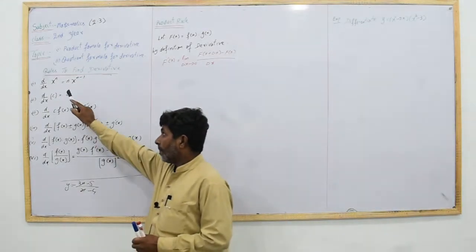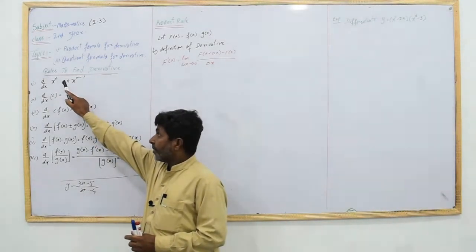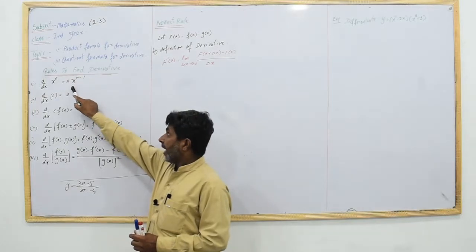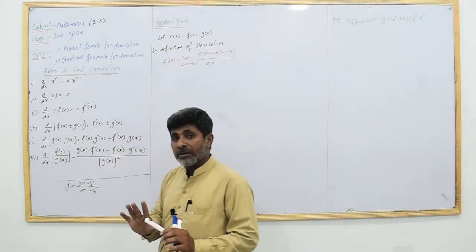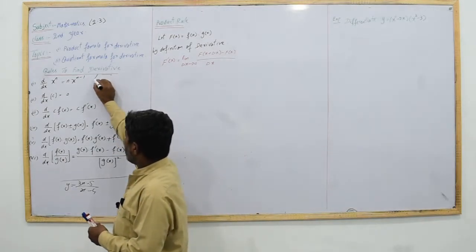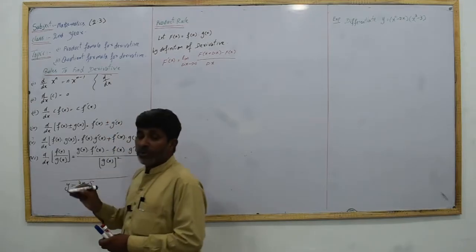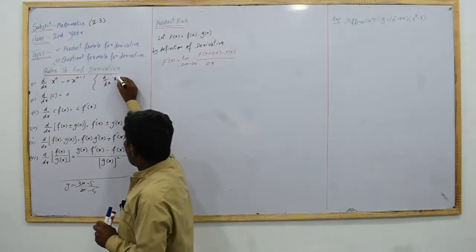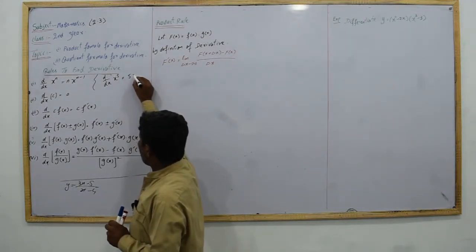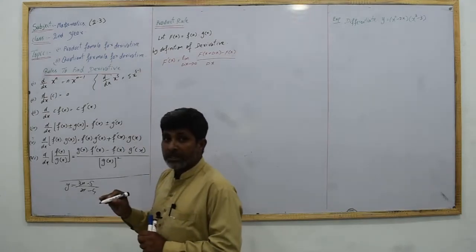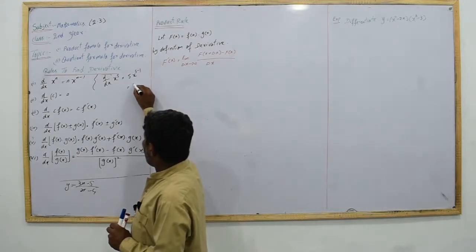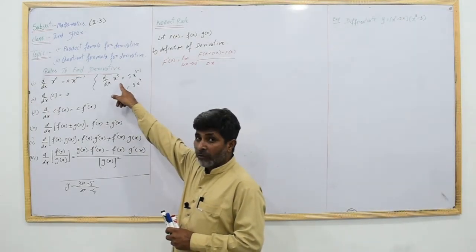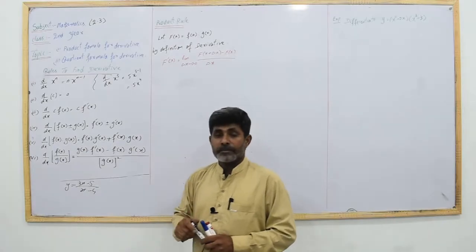The first rule is the power rule. The derivative of x raised to power n is n into x to the power n minus 1. For example, d/dx of x raised to power 5: we get 5 into x to the power 5 minus 1, which gives 5x⁴. That is the derivative of x⁵ by the power rule.